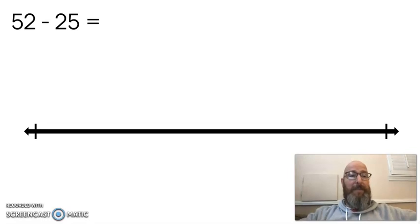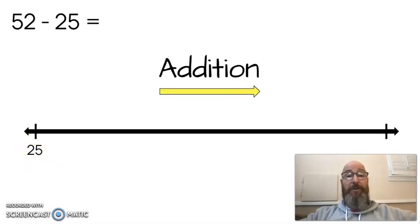52 minus 25. Again, where do I start? Down here. That's right. And I start with my smaller number because we're going to be working our way up to the 52. We're going to be adding using addition to get up to that larger number. Again, 25 is not a ten. So I'm going to start adding by ones until we get to 10. So add with me.